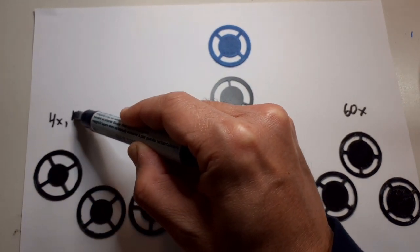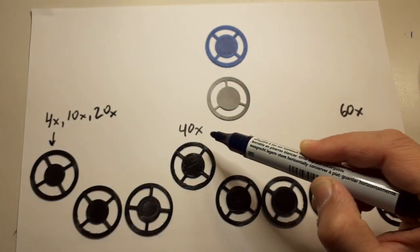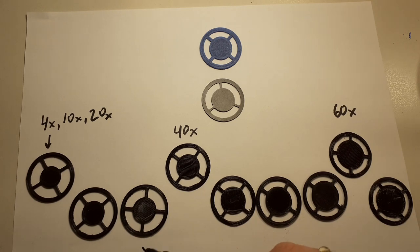And the one on the left side is the one that works best for several objectives, for the four times, the 10 times and also the 20 times objective. So this one works fine for all three of them. All of the others I'm just going to throw away because they are not optimal, either they cover too much or too little of the light.